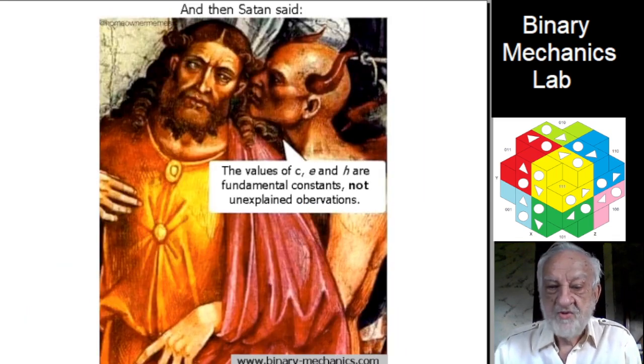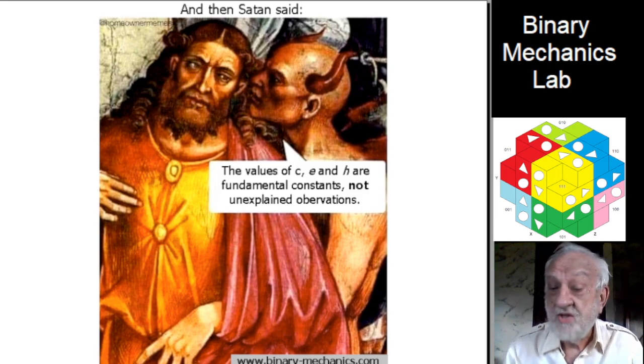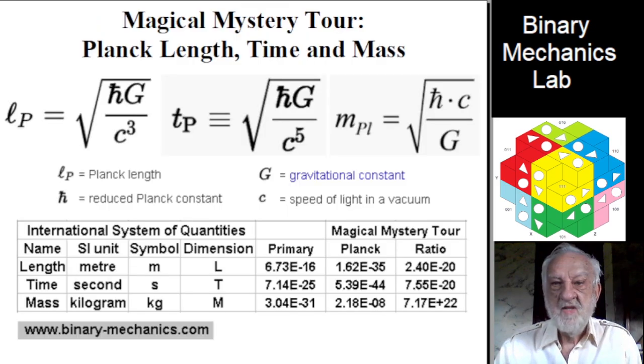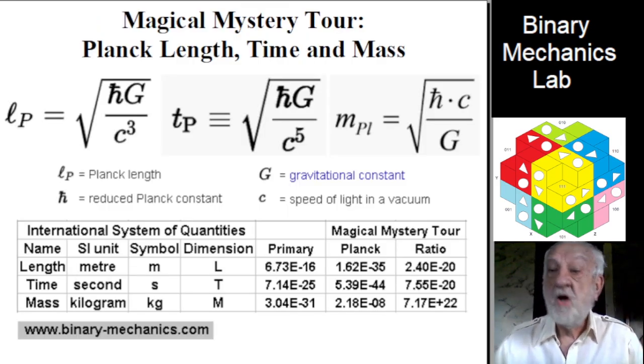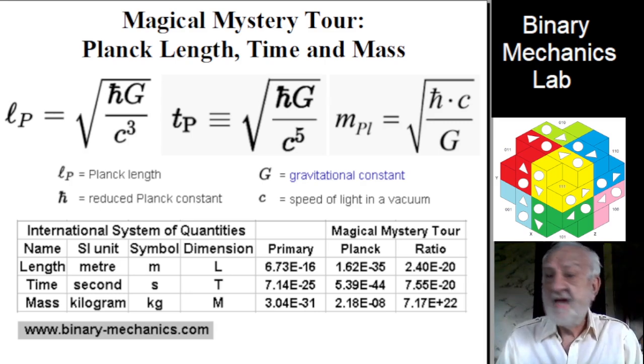It is almost as if Satan said the values of c, e, and h are fundamental constants, not unexplained observation. The so-called Planck limits for length, time, and mass are based on three secondary constants, G, h, and c.